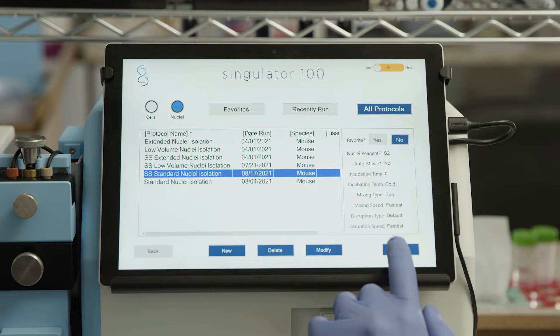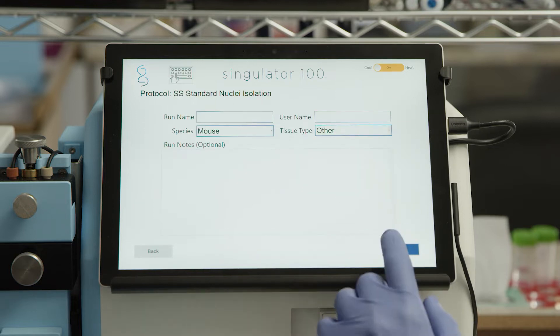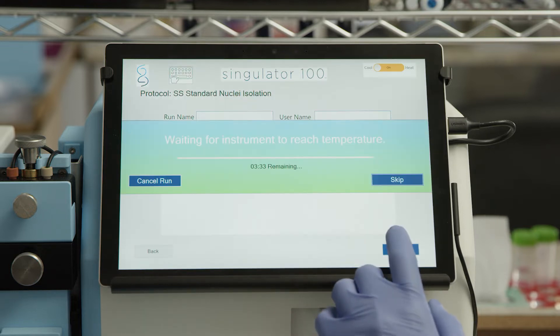Select the desired protocol and then select Next to proceed with a run or Modify to make changes to the default run parameters.